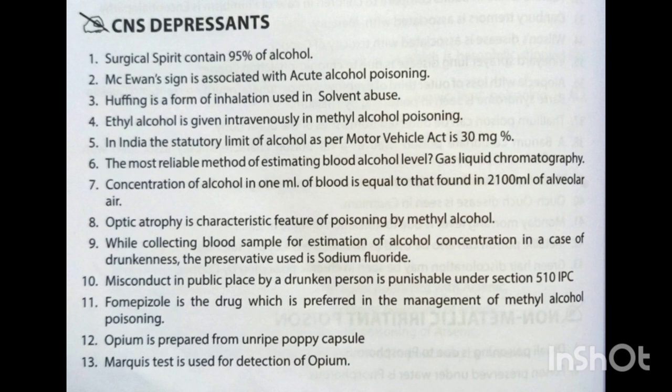CNS depressants. Surgical spirit contains 95% alcohol. McEwan's sign is associated with acute alcohol poisoning. Huffing is a form of inhalation used in solvent abuse. Ethyl alcohol is given intravenously in methyl alcohol poisoning. In India, the statutory limit of alcohol as per the Motor Vehicles Act is 30 mg%. The most reliable method of estimating blood alcohol level is gas-liquid chromatography.